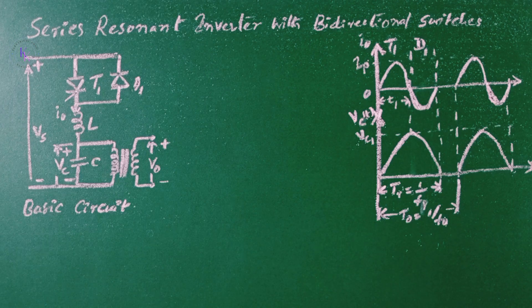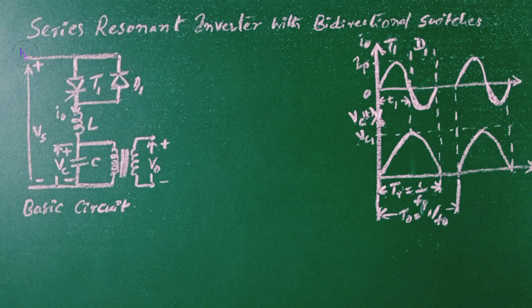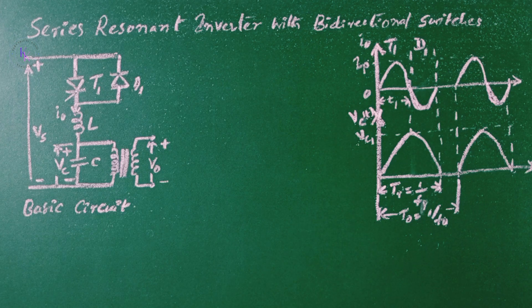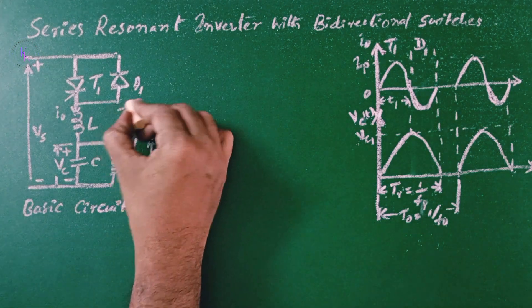The performance of the series inverter can be significantly improved by connecting an anti-parallel diode across the thyristor as shown in this diagram.